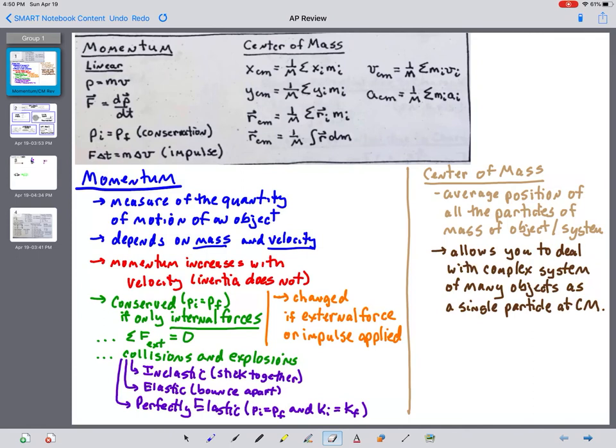An object can never have zero inertia unless it has zero mass, but then you don't have an object. An object can have zero momentum if it has zero velocity. So momentum changes with motion.